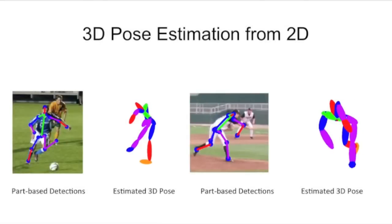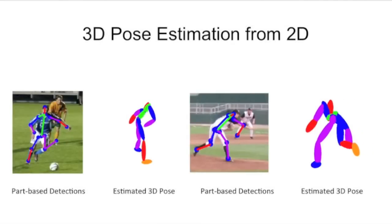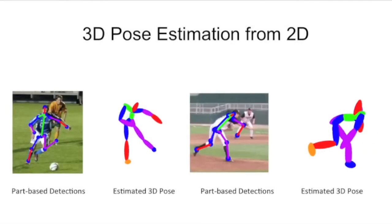Our method is also able to enforce joint angle limits, even if the 2D part detections do not have a corresponding valid 3D interpretation.